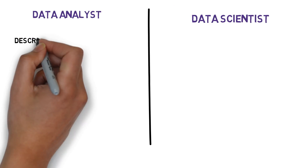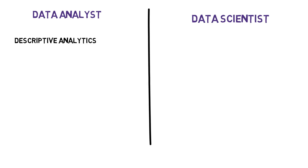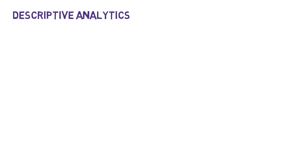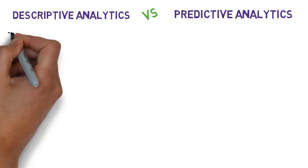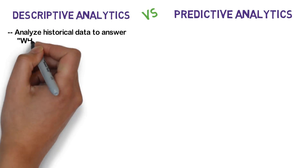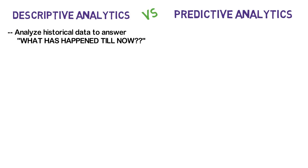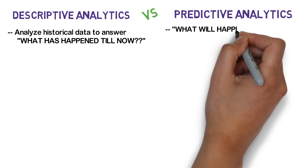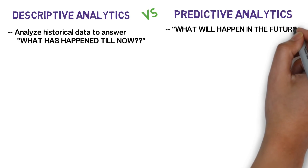Data analyst does a lot of descriptive analytics. On the other hand, data scientist also does descriptive analytics, but data scientists also do something called predictive analytics. Descriptive analytics is all about analyzing historical data to answer the question: what has happened till now? Predictive analytics also involves analysis of historical data, but is mainly about answering the question: what will happen in the future?